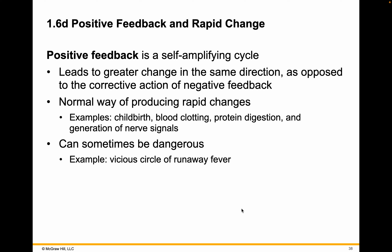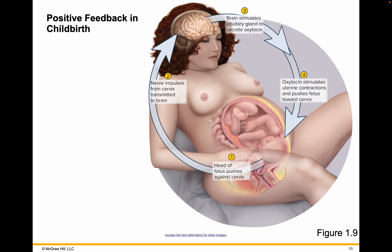Positive feedback, when it's the correct situation, can be good, but it also can be dangerous sometimes. Runaway fevers are the result of brain changes that lead to a positive feedback loop. But childbirth and blood clotting are good examples of when you want to use positive feedback.